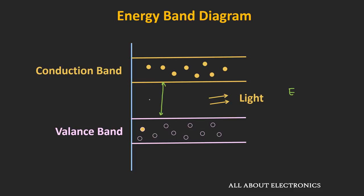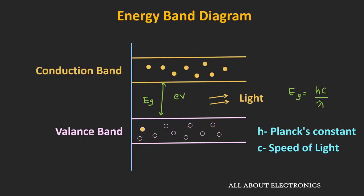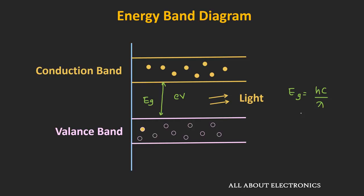And usually, this band gap is represented in electron volts. So if Eg is the band gap, then the energy of the photon can be given as hc divided by λ, where h is Planck's constant and c is the speed of light. And λ represents the wavelength of the emitted light. So as you can see from the equation, the wavelength is inversely proportional to the band gap. So by band gap engineering, we can change the color of the emitted light.